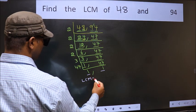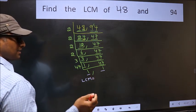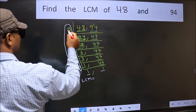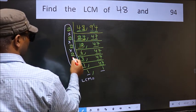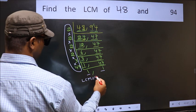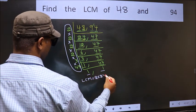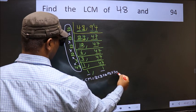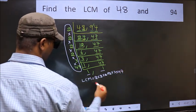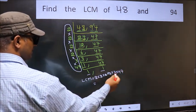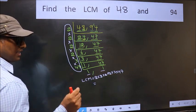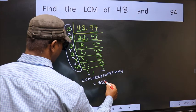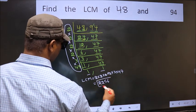So our LCM is the product of these numbers: 2 × 2 × 2 × 2 × 2 × 2 × 3 × 47. When we multiply these numbers we get 2256, which is our LCM.